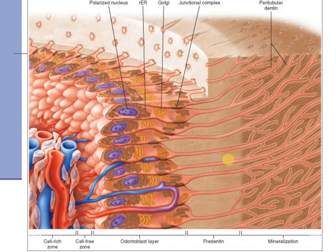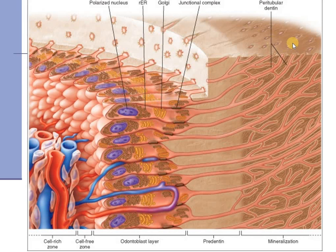This diagrammatic representation shows us the tubular nature of dentine. Each of these odontoblasts has an odontoblastic process that runs within the dentine. In cross-section, the dentine is seen as tubular in nature with multiple holes. The odontoblastic processes branch and are in contact with each other.